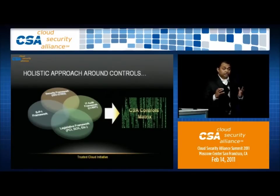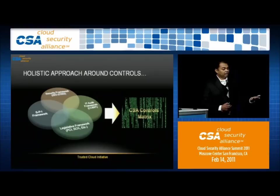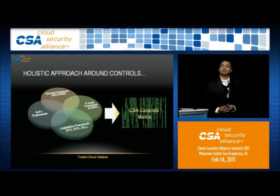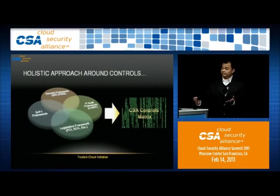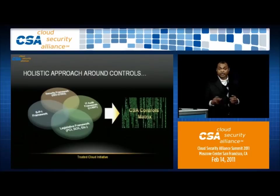This group is not working in isolation. It is looking at different standards and security frameworks such as ISO 27001 and 27002, legislative frameworks, PCI and SOCs, as well as audit frameworks like COBIT, and looking at all these different controls holistically to come up with what we call the CSA control matrix — a 100-point spreadsheet you can look into for details.